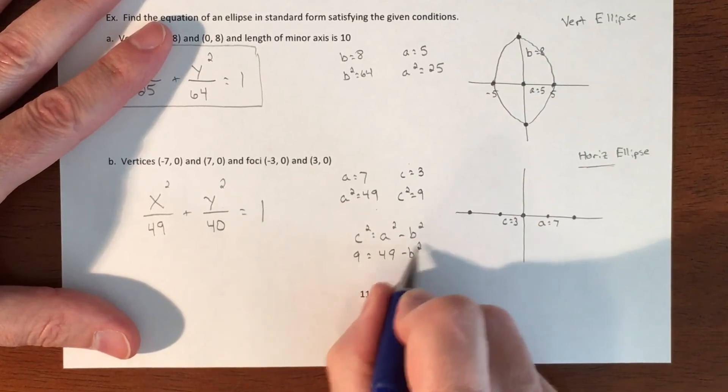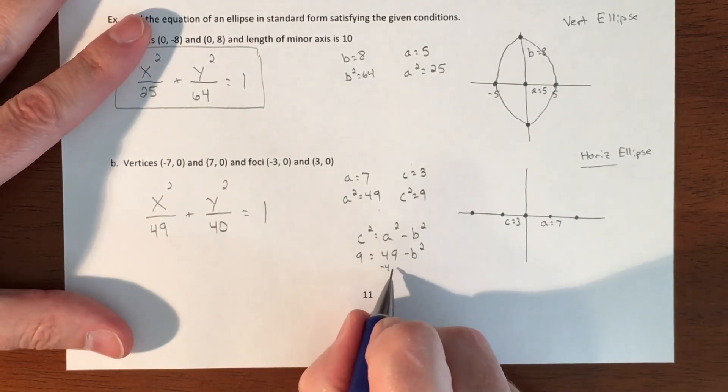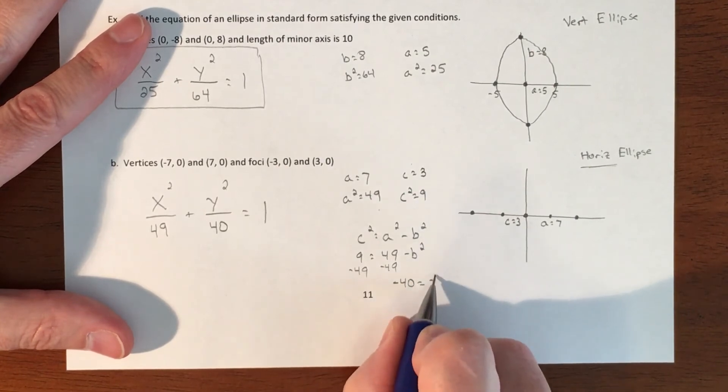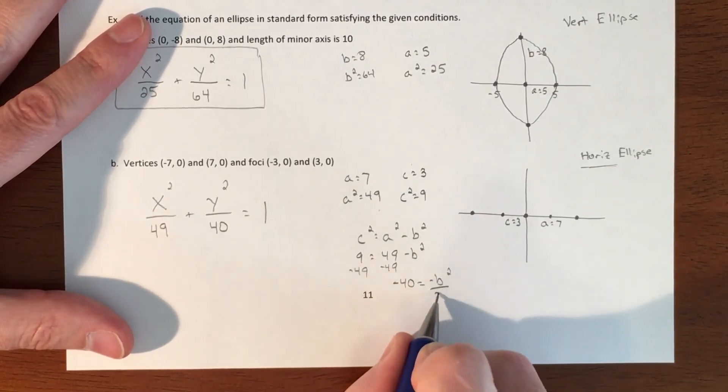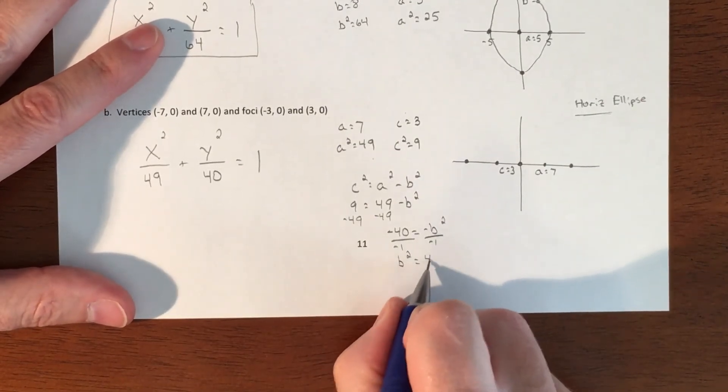You can solve for b squared. If you subtract 49, you're looking at -40 equaling -b squared, and then divide by -1, so that gets you b squared equaling 40.